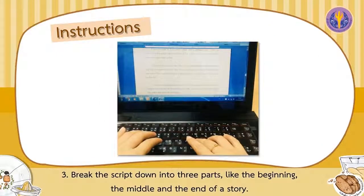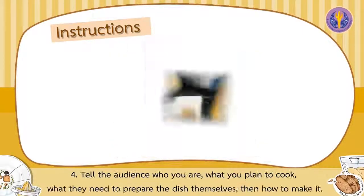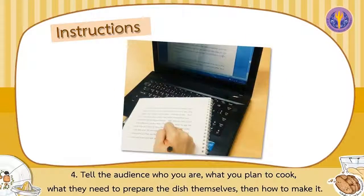Third, break the script down into three parts: the beginning, the middle, and the end of a story. Fourth, tell the audience who you are, what you plan to cook, what they need to prepare the dish themselves, then how to make it.